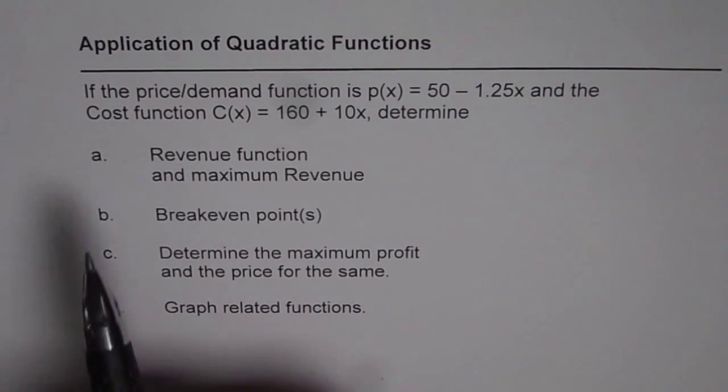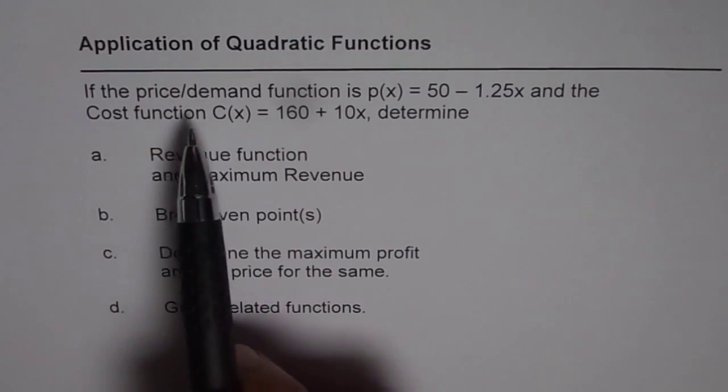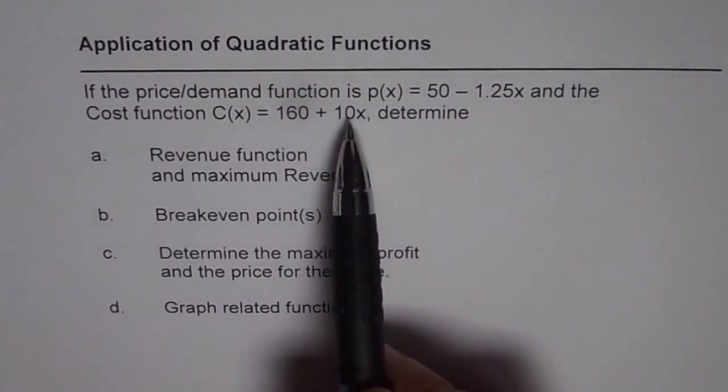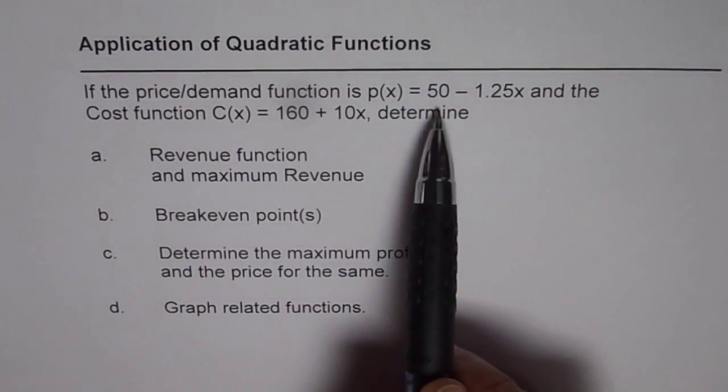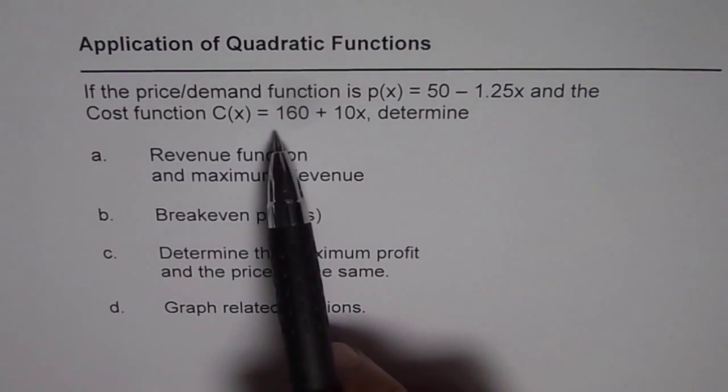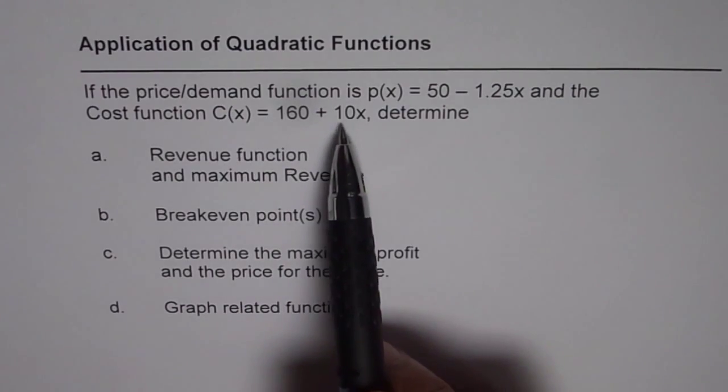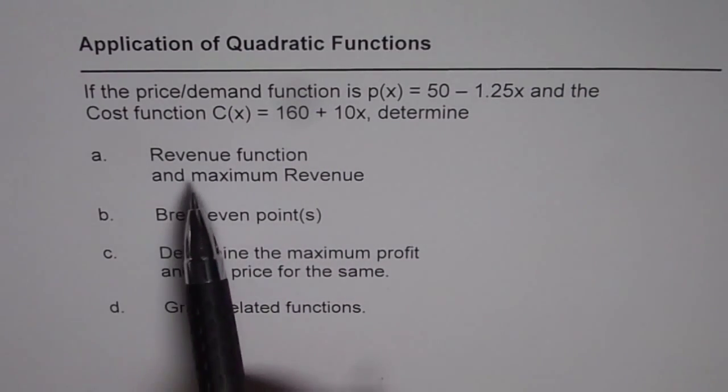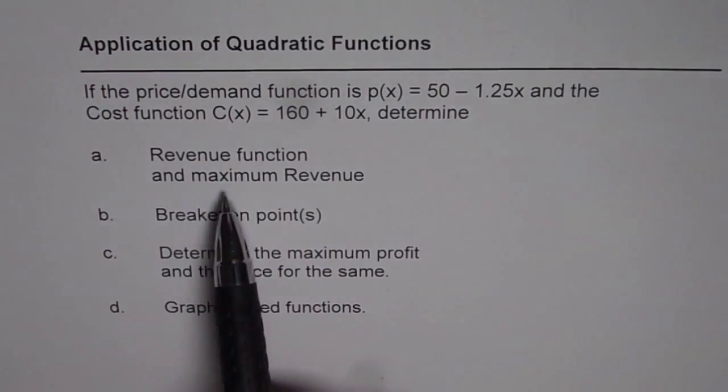Now here is a question. If the price or demand function is P(x) = 50 - 1.25x and the cost function C(x) = 160 + 10x, determine revenue function and maximum revenue.